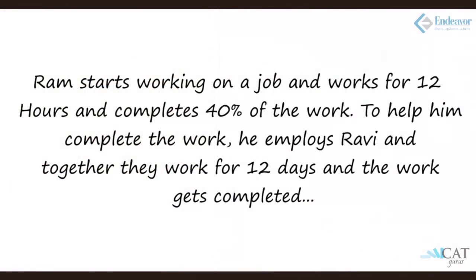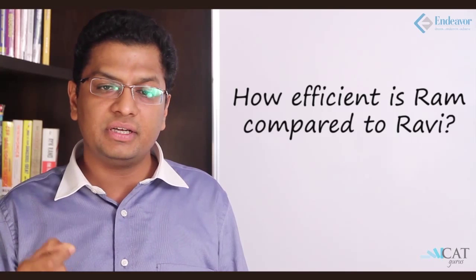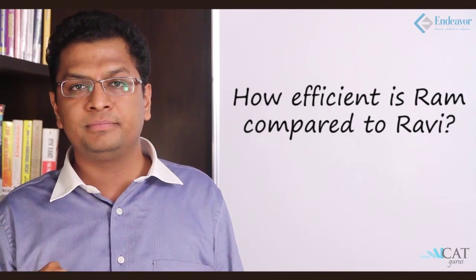Let's have a look at another one. Ram starts his working on his job and works for 12 hours and completes 40% of the entire work. To help him complete the work, he employs Ravi as well and together they work for 12 days and get the work completed. How efficient is Ram compared to Ravi? Now Ram alone was working for 12 days. He completed 40% of the job and he and Ravi together worked for another 12 days to complete the job. So at the end of the 12th day, how much work was left? 40% was complete so 60% was left.